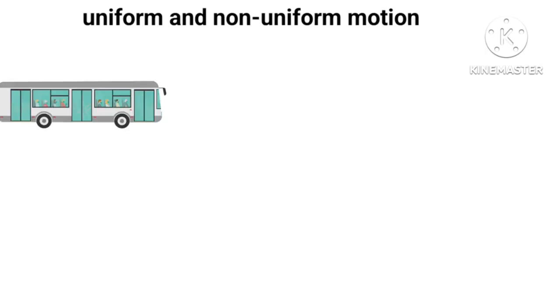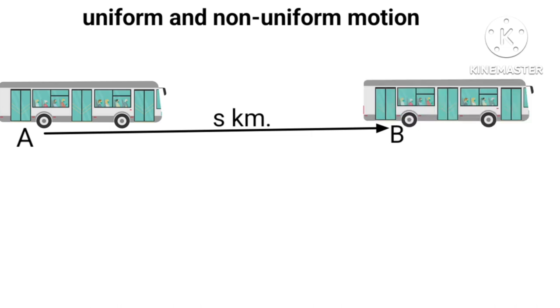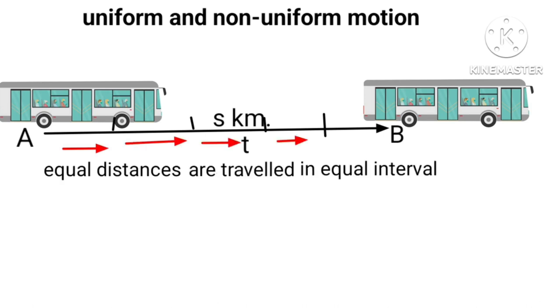Let us consider a bus start from A, travels a distance of S kilometer to B on a straight road. Bus travels each kilometer in equal interval time T. What we see is equal distances are traveled in equal interval of times. This is uniform motion.